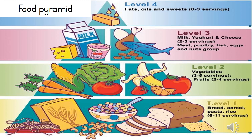The green shows level two — our vegetables and fruit section. For vegetables, we should have between three and five servings. For fruits, between two and four servings. Level three is shown in pink, combining our dairy and poultry groups. Between these two we must have at least two servings per day.